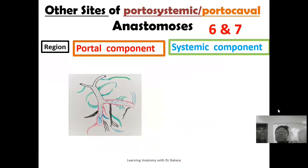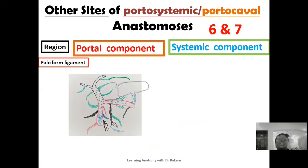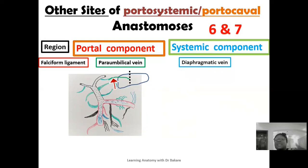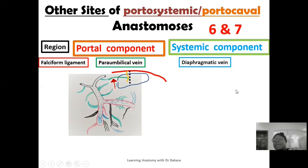The sixth region where portosystemic anastomosis is created is at the falciform ligament. The falciform ligament connects the anterior surface of the liver with the anterior abdominal wall. The portal component here comes from the paraumbilical vein, which is directed towards the region of the falciform ligament on the anterior surface of the liver. This forms anastomosis with the diaphragmatic vein at this region.